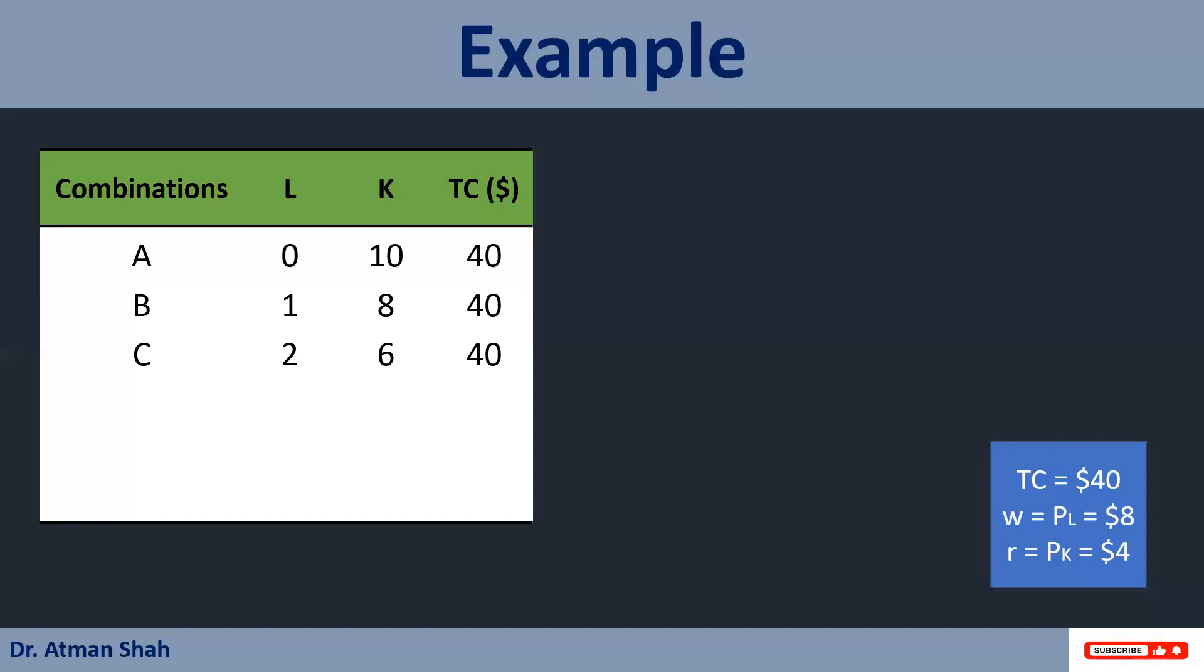Similarly, we can find combinations D, E and F. You can see the total cost is constant, right? So if you increase the labor units, you have to decrease the capital units.